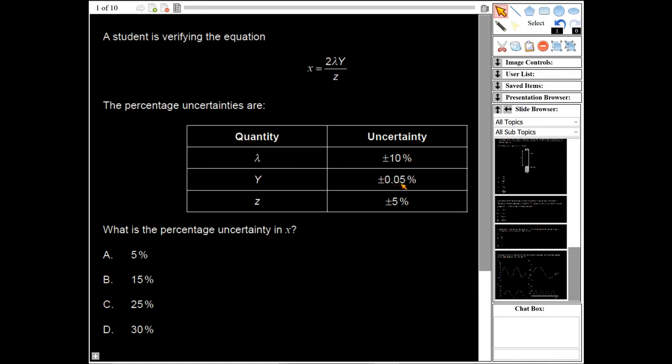The y here has percentage error of 0.05, that's very small compared with the 5 or the 10, so we can effectively ignore that and just add the 10 and the 5 together, which would make 15. So the correct answer would be B.